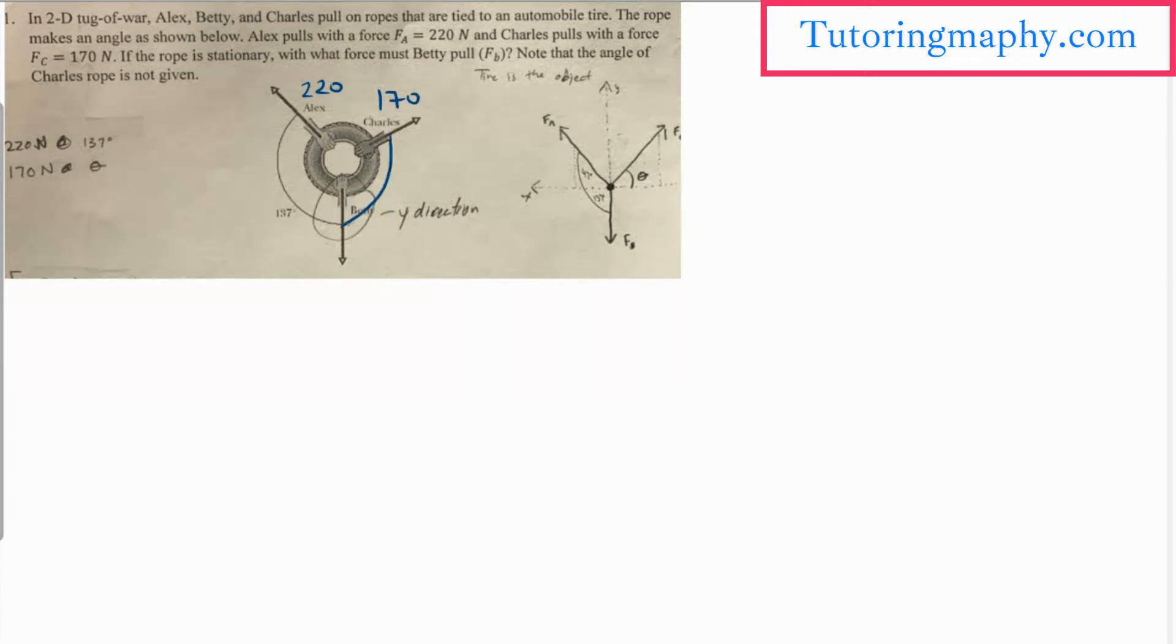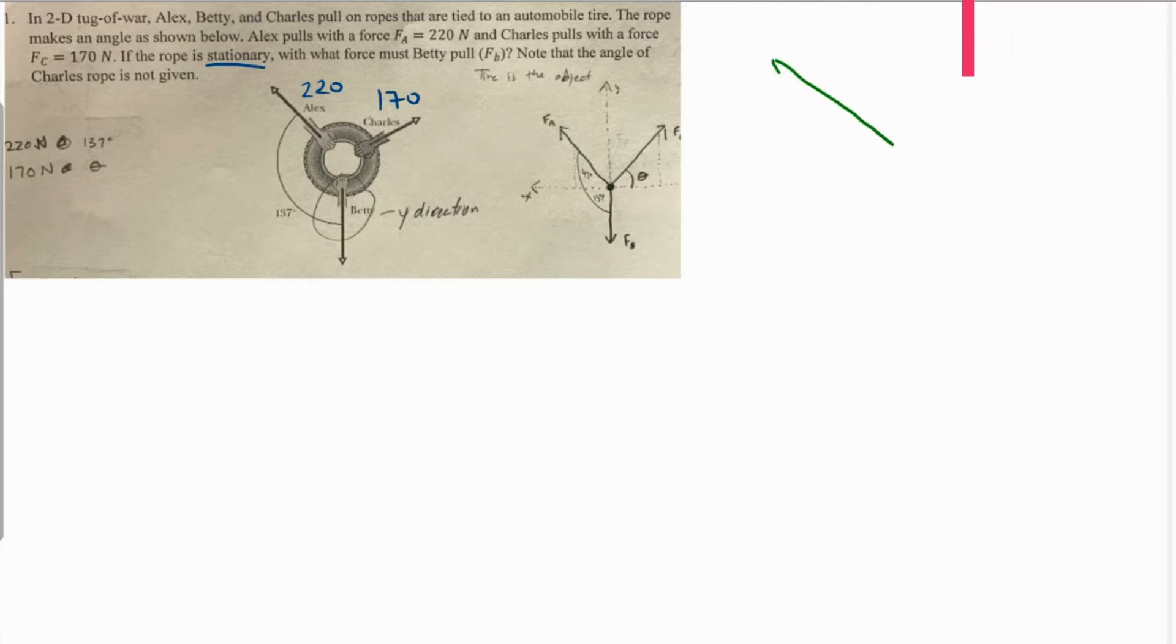This is also unknown, and this is stationary, so definitely the net force will be zero. Let's try to make an FBD over here, and we have to do that the net force should be zero. We have to make the components as well, so let's say this is the horizontal and the vertical line.